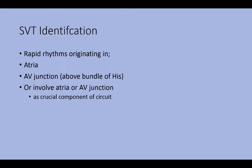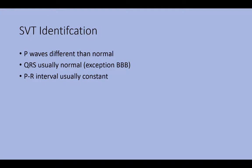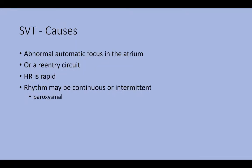Supraventricular tachycardia is rapid rhythms that originate either in the atria, around the AV junction above the bundle of His, or rhythms that involve the atria or the AV junction as a crucial component of a circuit. We identify SVT by P waves that look different than normal, a QRS complex that usually looks normal — upright and narrow — with the exception of bundle branch block, and a PR interval that is usually constant. It can be caused by an abnormal automatic focus in the atrium or a reentry circuit. The heart rate is rapid and the rhythm may be continuous or intermittent; if intermittent, it's called paroxysmal supraventricular tachycardia.